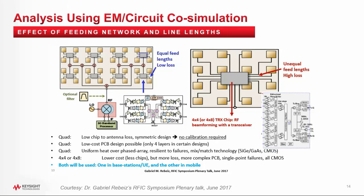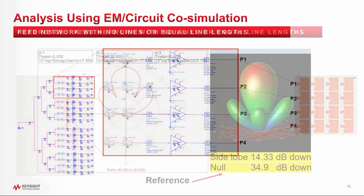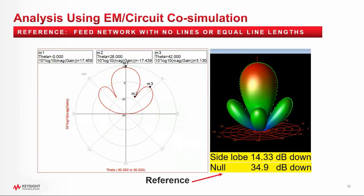Here is my system interfacing the antenna patches, and notice it has no feed lines between the transmitter output and the antenna patches. All 16 connections are identical. I want to run a simulation on this in order to get a baseline or reference output profile. My beam is centered on the Y-axis, the side lobe is 14.3 dB down from the peak, and the nulls are about 35 dB down from the peak. This is my clean beam reference.